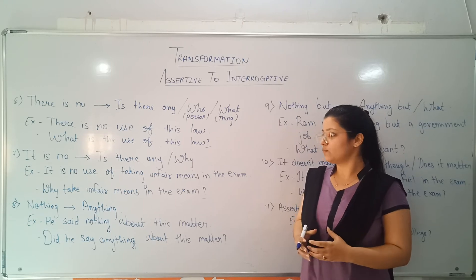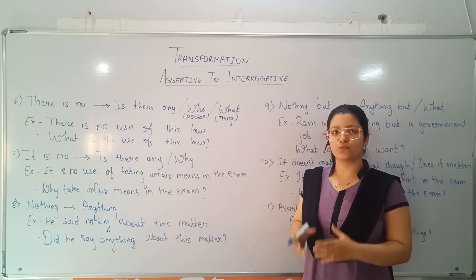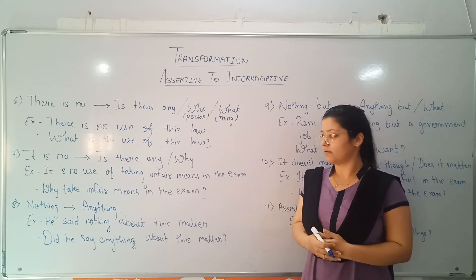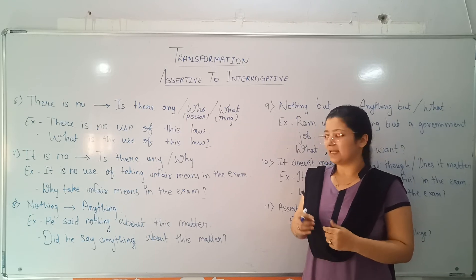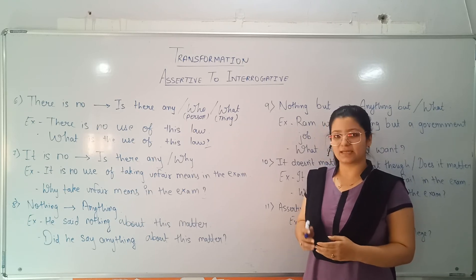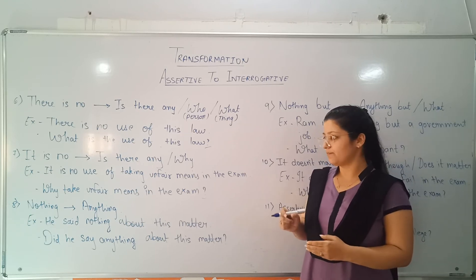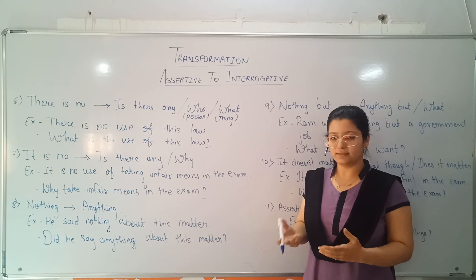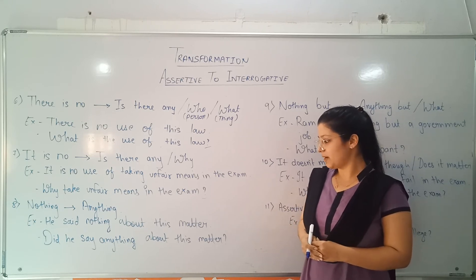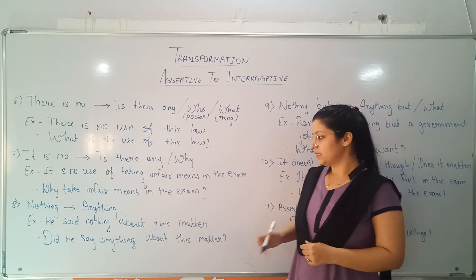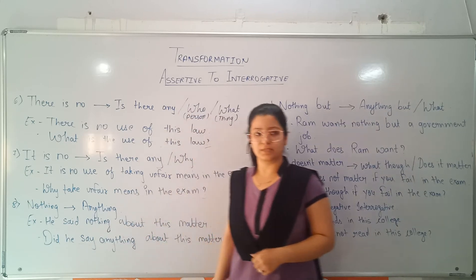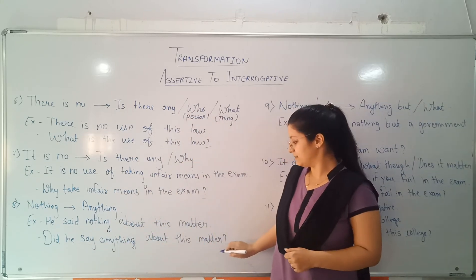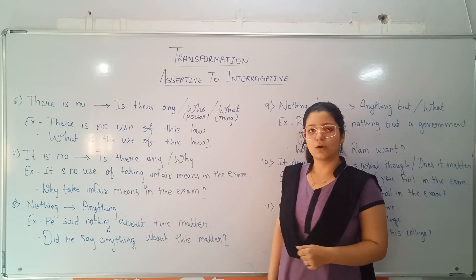Next, 'nothing' will be replaced with 'anything'. For example, 'He said nothing about this matter.' In this sentence, we will start with 'did' as per the tense: 'Did he say anything about this matter?' and we end the sentence with a question mark.